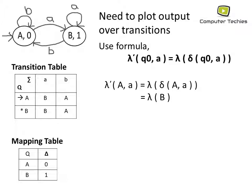Referring to the transition table: delta of (A, a) gives us state B. Then referring to the mapping table, the output of state B is 1. Therefore lambda-dash of (A, a) = 1. This means that if you are on state A and input a is applied, the output with respect to that input is 1.